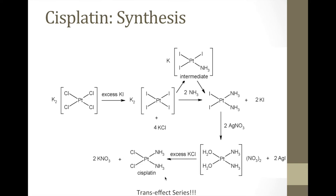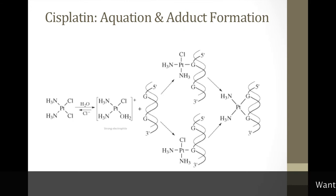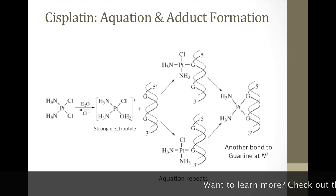Looking at the mechanism of action of cisplatin, there's a good video I will link in the description that provides a nice visual representation of how cisplatin actually works. There is a lot of biochemical signaling that takes place, but I'll be focusing more on the inorganic chemistry — specifically how DNA adducts are formed and how that ultimately leads to apoptosis, also known as programmed cell death. The main chemistry going on involves adduct formation reactions.